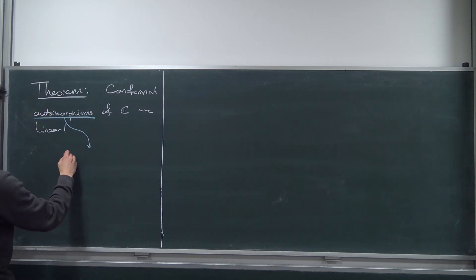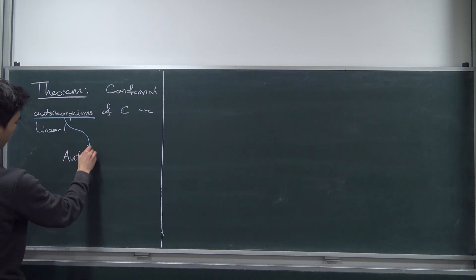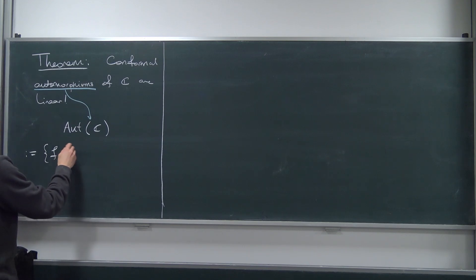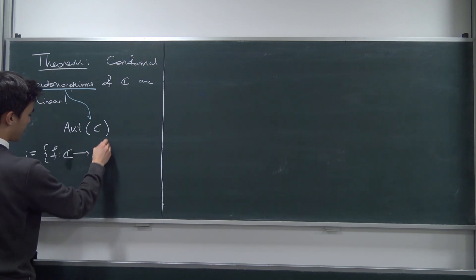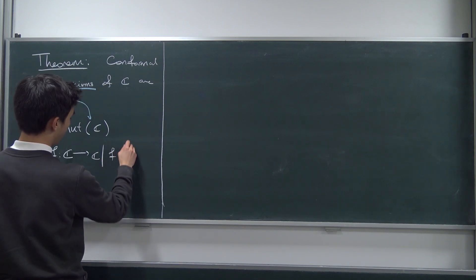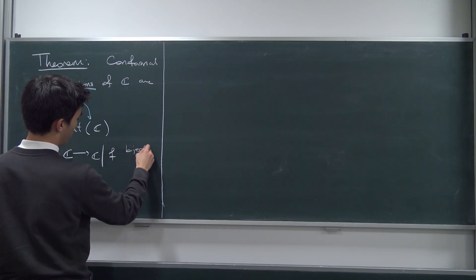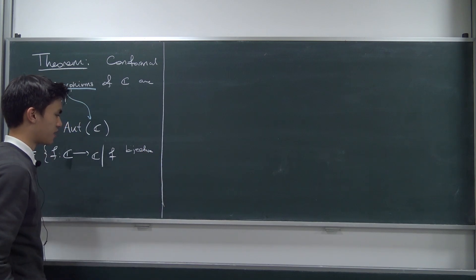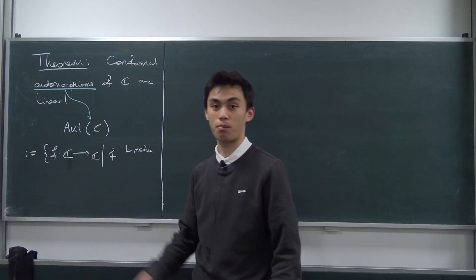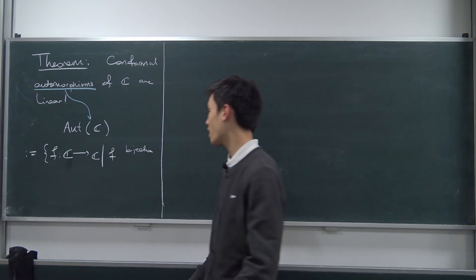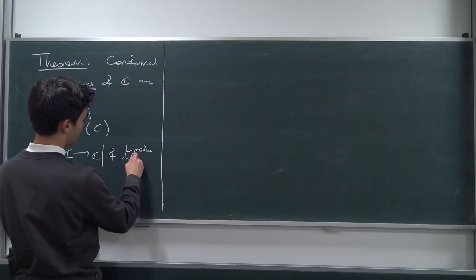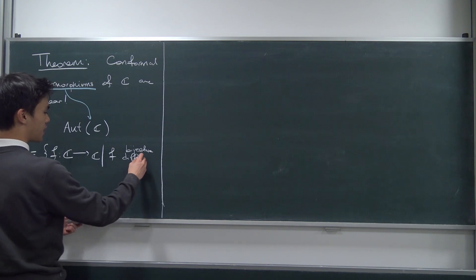I'm going to denote this set as Aut(ℂ), the automorphisms of the complex plane. Aut(ℂ) consists of all maps that take you from ℂ into ℂ, but we also need F to be bijective. Now we also wanted to preserve some nice structure or some nice property. What's a nice property of functions on the complex plane? Well, differentiability — we also want F to be differentiable, or entire, since it's differentiable on all of ℂ.